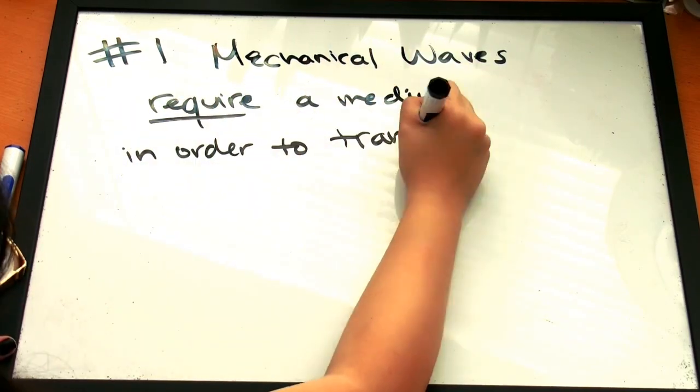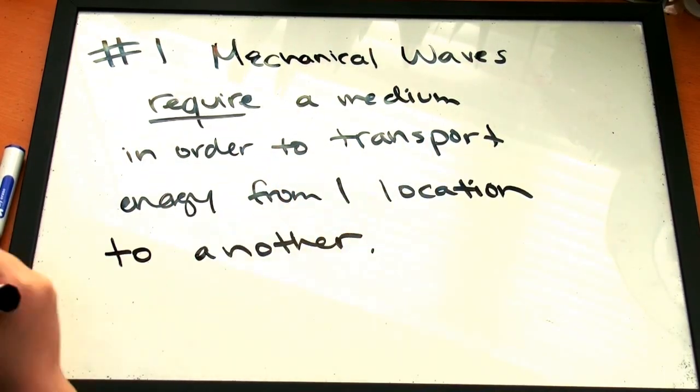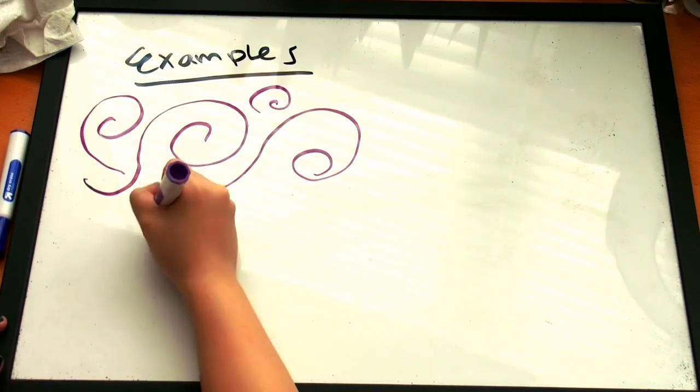Number one, mechanical waves require a medium in order to transport energy from one location to the other. Examples of a medium include air, water, or solids.